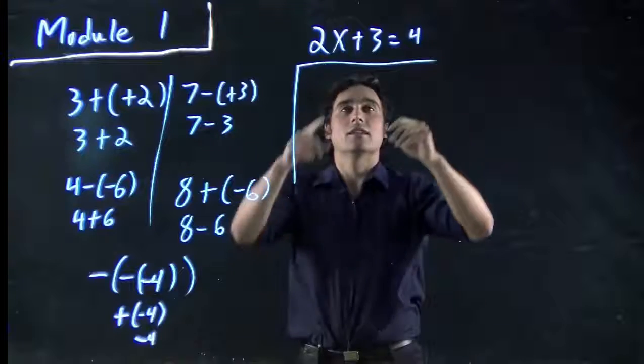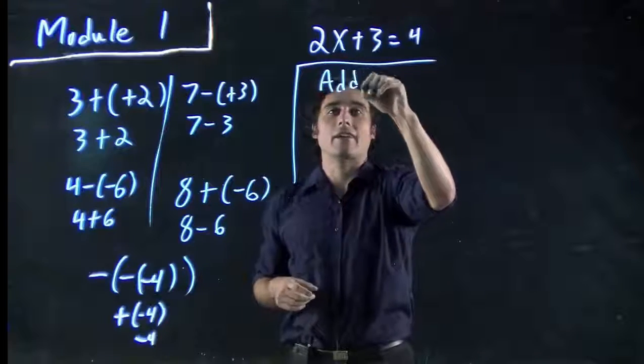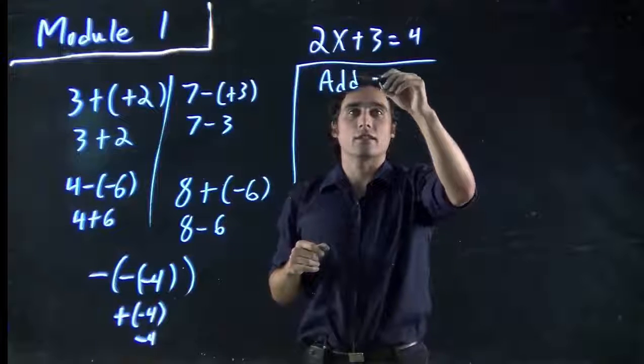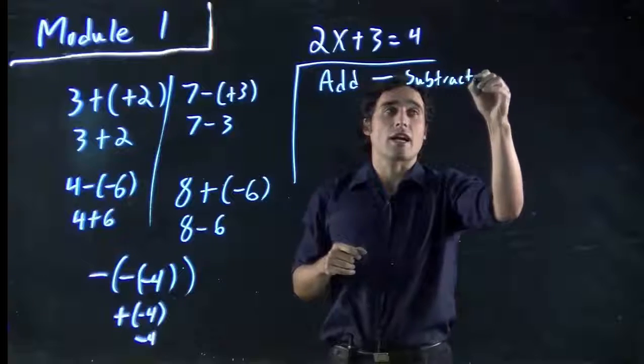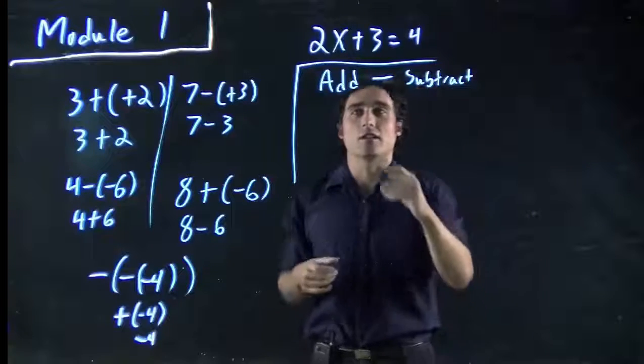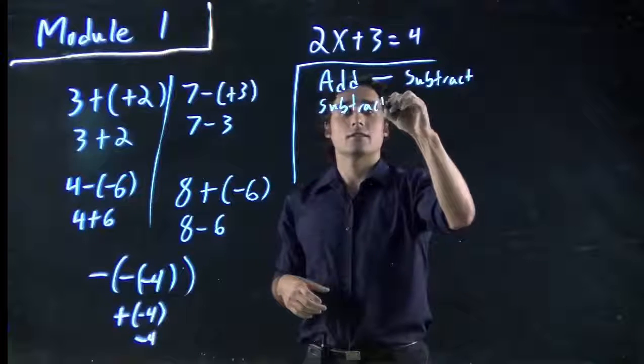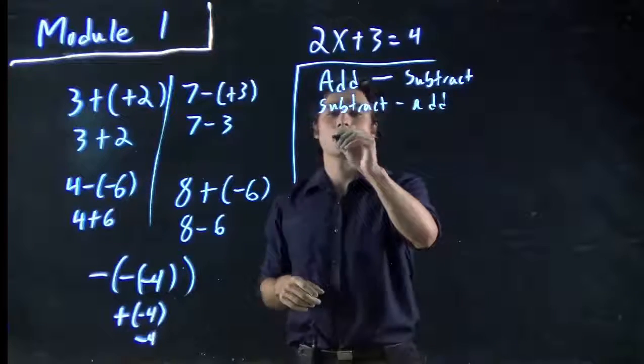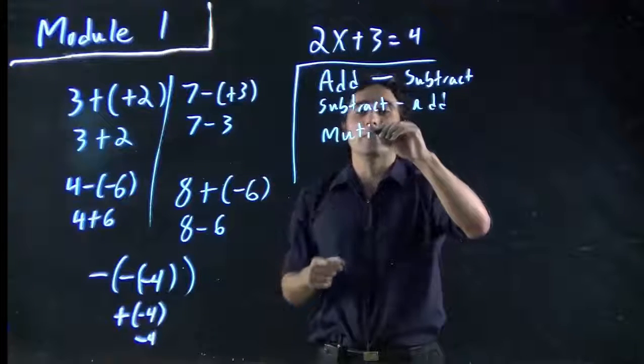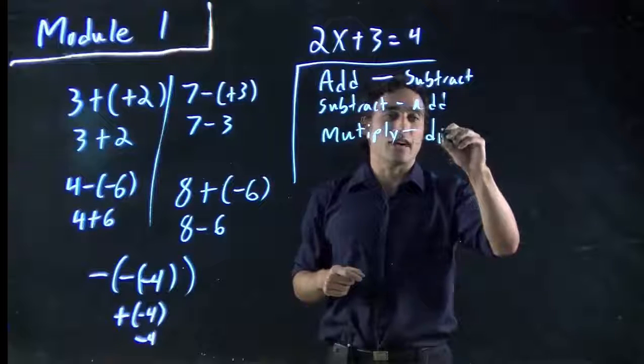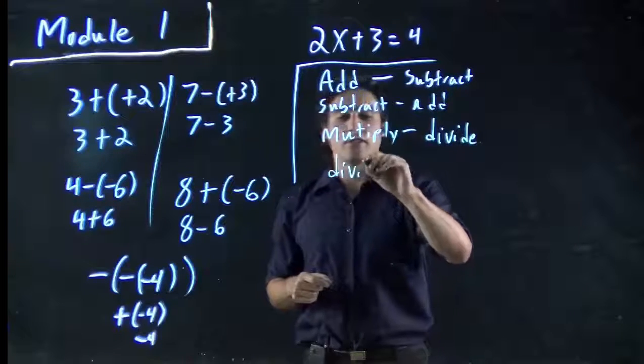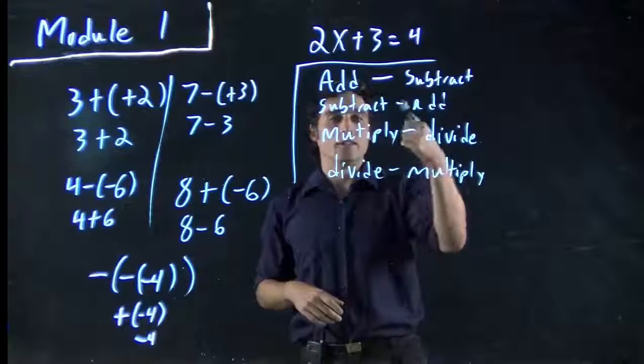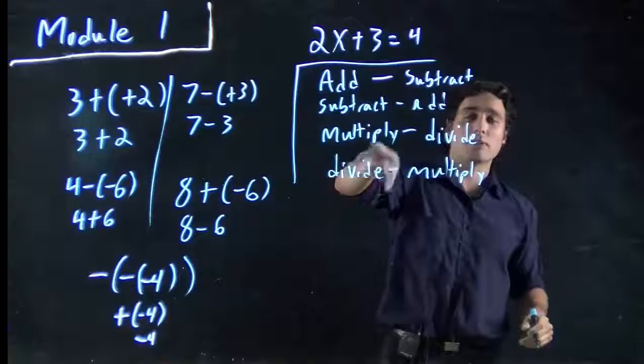So if I want to remove this plus 3, if I have an addition, and I'm just going to say add, if I have something adding to my variable x, to get rid of it, subtract. Subtraction and addition are the opposite of each other. So if I had something subtracting, to get rid of it, I would add. So what do I mean? If I want to get rid of this plus 3, I would subtract 3. We'll talk more about that in a second. And if I had multiplying, so in this case I have 2 times x. If I wanted to get rid of that 2, I'd have to divide the 2 out.